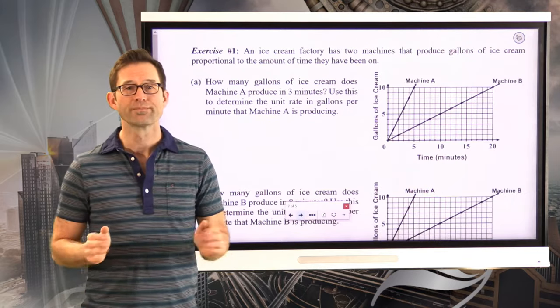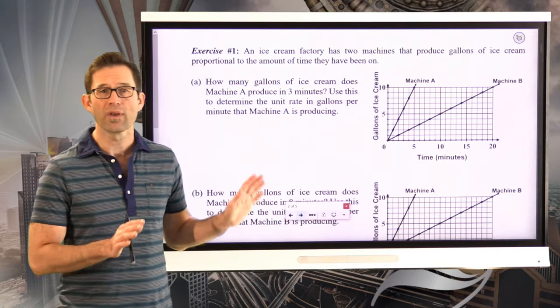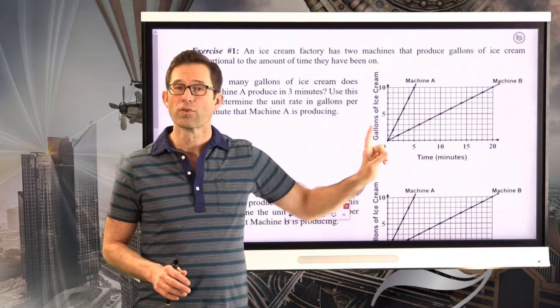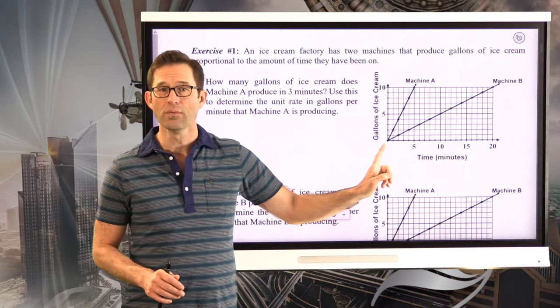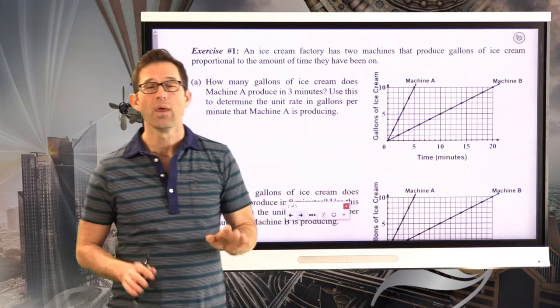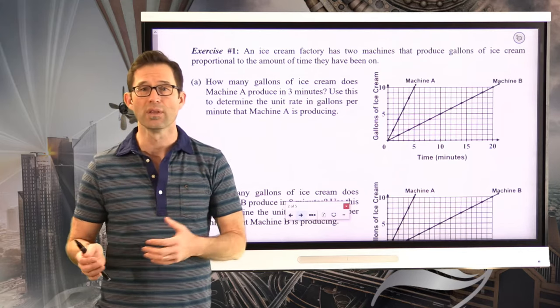Exercise number one. An ice cream factory has two machines that produce gallons of ice cream proportional to the amount of time they've been on. Letter A asks us, how many gallons of ice cream does machine A produce in three minutes? Use this to determine the unit rate in gallons per minute that machine A is producing. So before we even get into letter A, let's discuss this graph. Definitely proportional by both of them for two reasons. One, they go through the point zero, zero. They both have values of zero zero, and they're going up in straight lines.